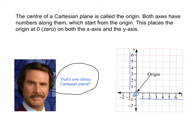From the origin, moving towards the left, the numbers turn negative. And from the origin going down on the vertical axis, the numbers also turn negative. So, origin point. This point right here is zero. It's one classy looking Cartesian plane.